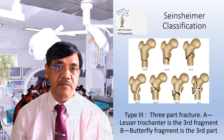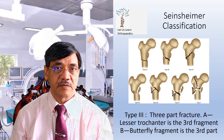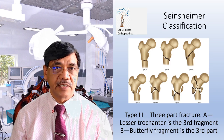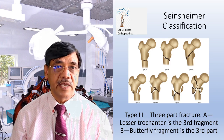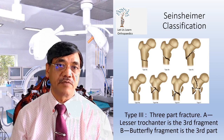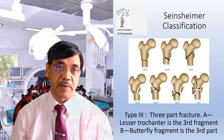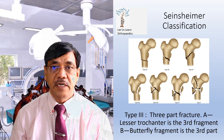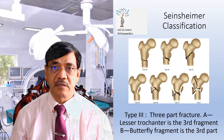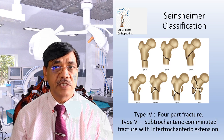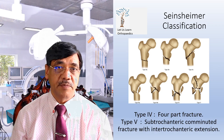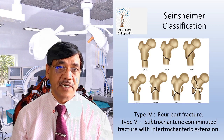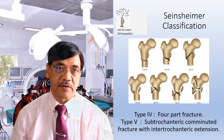Type 3 consists of three-part fractures. Type 3A is where the lesser trochanter is a third fragment. Type 3B is where a butterfly fragment is the third fragment. Type 4 is a four-part fracture, with a butterfly fragment, proximal and distal fragments, and a lesser trochanter fragment.